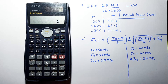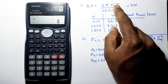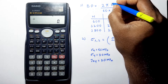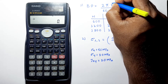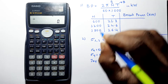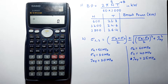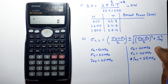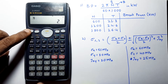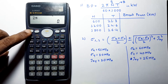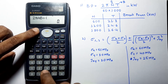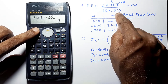We have the brake power formula which is given by 2π times N times T divided by 60 into 1000. We have two variables here: N, which I will denote as A, and torque T, which I will consider as B. Now let's program our calculator with this formula — it contains 2π, and I will consider N as A and T as B.